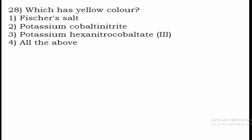Question 28: Which has yellow color among Fischer salt, potassium cobalt nitrate, and potassium hexanitrocobaltate? Fischer salt is yellow in color, potassium cobalt nitrate is also yellow, and potassium hexanitrocobaltate is also yellow. Therefore all three salts are yellow in color, and option 4 — all of the above — is the right answer.